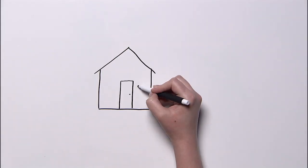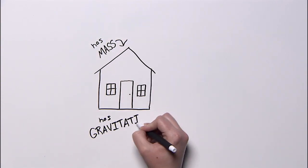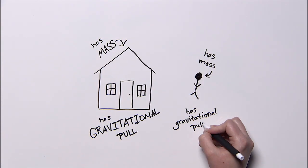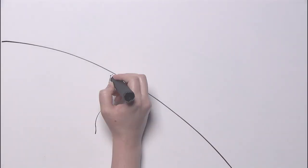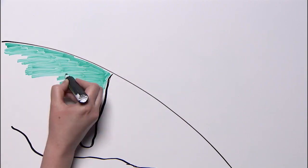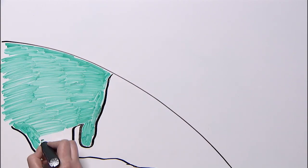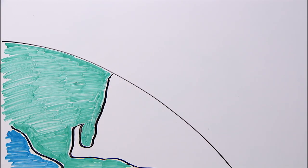Anything that has mass exerts a gravitational pull, even you. But objects with greater mass have stronger gravitational pull. Since the Earth has more mass than anything for miles and miles around, it exerts a really strong gravitational pull.